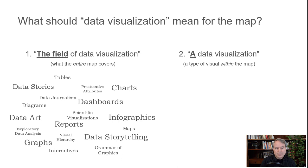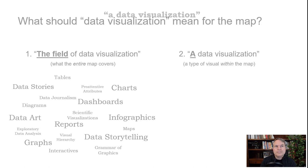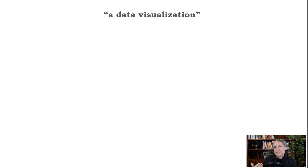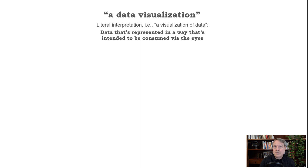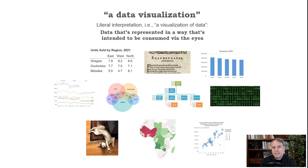When it comes to talking about a data visualization as a type of visual, things get a little bit more potentially controversial. If we take this definition literally — data visualization — what does it mean? It's just data that's represented in a way that's intended to be consumed via the eyes. A visualization of data. So if we take this term literally, then all of these things technically are data visualizations: this is a visualization of JPEG data — this is my dog, Luna — this is a visualization of categorical data, this is a visualization of hierarchical data, a visualization of textual data, of binary data.